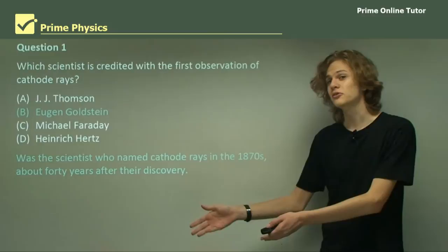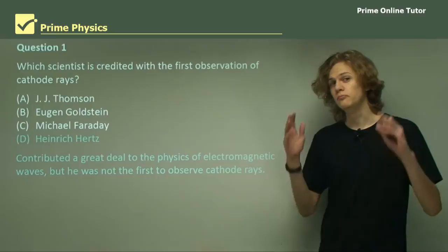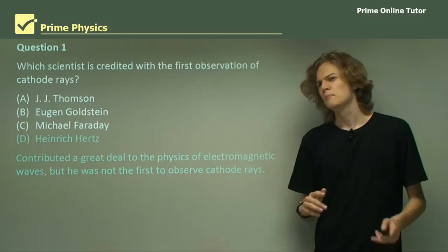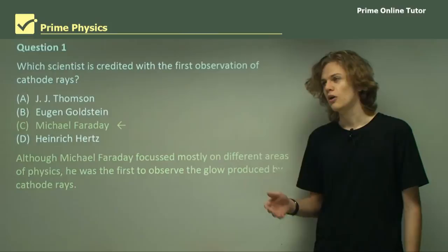Is it Eugene Goldstein then? Well, no. He was the scientist who named cathode rays after he discovered that they were coming from the cathode. But he wasn't the first to observe them. Heinrich Hertz contributed a lot to the field of physics and he did in fact do a lot of experiments on cathode rays. But he wasn't the first to discover them.